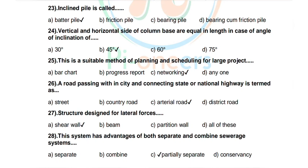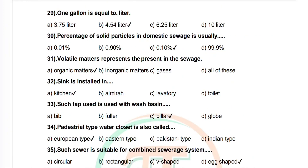Question 28: This system has the advantage of both separate and combined service systems. Options: partially separate combined, partially separate, conservancy. Correct answer is partially separate. Question 29: One gallon is equal to how many liters? Options: 3.75, 4.54, 6.25, 10. Correct answer is 4.54 liters.